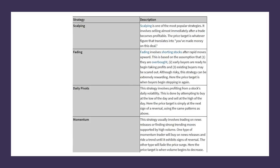Daily pivots involve profiting from a stock's daily volatility by attempting to buy at the low of the day and sell at the high of the day. The price target is simply at the next sign of reversal. Then we have momentum — this strategy usually involves trading on news releases and finding strong trending moves. For example, non-farm payroll data, a Mario Draghi headline, North Korea shooting off a missile, or something in the Middle East affecting oil. One type of momentum trader will buy on news releases and ride a trend until it exhibits signs of reversal; the other type will fade the price surge.